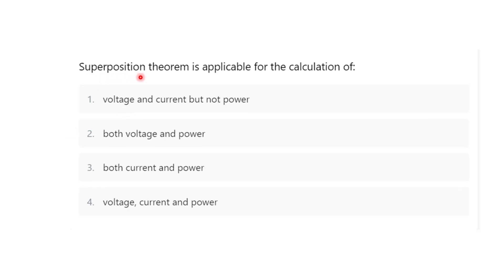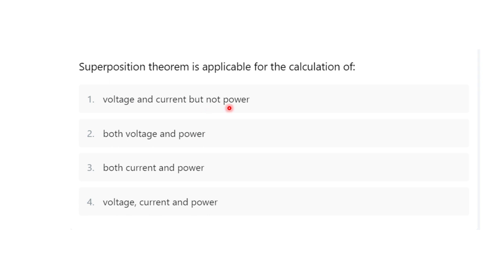Next MCQ: the superposition theorem is applicable for the calculation of — Option 1: voltage and current but not power; Option 2: both voltage and power; Option 3: both current and power; Option 4: voltage, current and power. The correct option is Option 1 — voltage and current but not power.